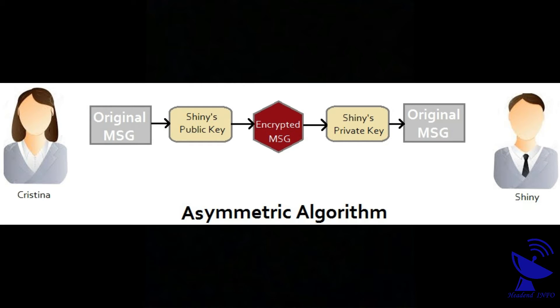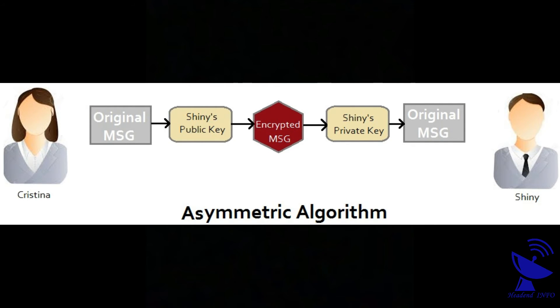Christina sends the encrypted message to Signee. Signee uses his private key to read the message. The advantage of the asymmetric algorithm is that we do not need to share our private key over the network, so your key remains safe. Even if someone gets a copy of the public key, they cannot open the message sent by the sender because of the locked padlock.